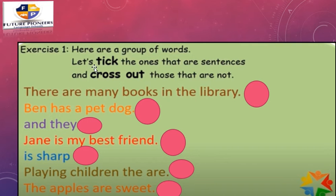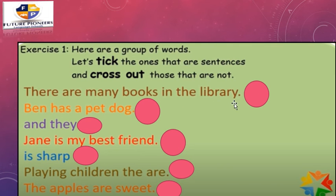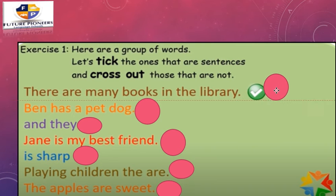Let's take exercise one. Here are a group of words — let's identify the ones that are sentences and cross out those that aren't. The first one: There are many books in the library. Does it give you a complete thought? Does it begin with a capital letter? Does it end with a period? Yes, all correct — this is a sentence. The T in 'There' is capital and it ends with a period. Let's put a tick.